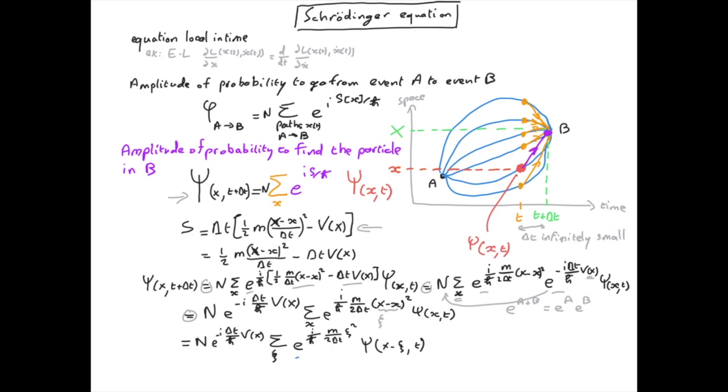We recognize here a phasor and we are summing over phasors. The phase is usually extremely large because we divide by delta t which we choose to be infinitely small. This means we sum over all phasors in all directions and this term essentially gives zero except when xi itself is infinitely small. In this case the phasors lie in the same direction.